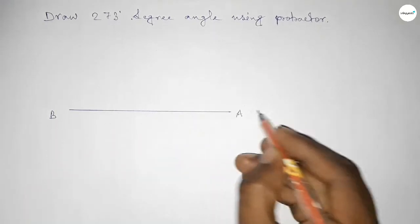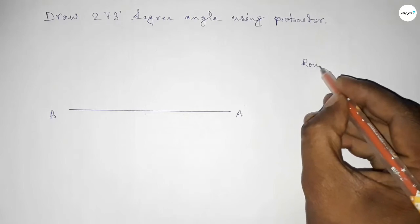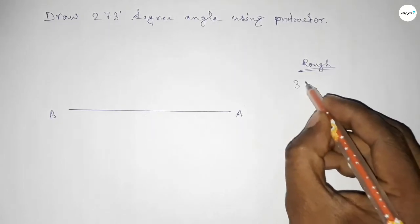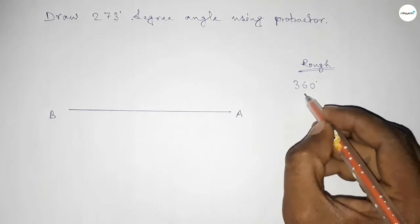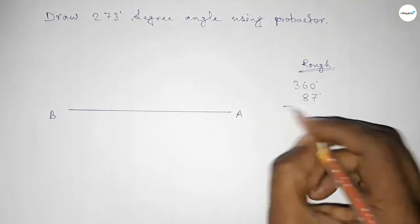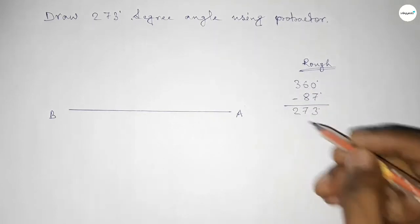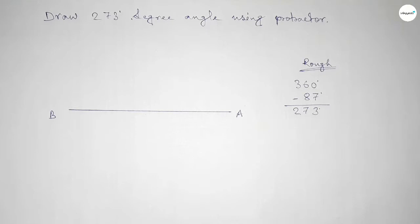Taking here point B and here point A. Now roughly discussing some calculation here. So if we subtract 87 degrees from 360 degrees, then we can get 273 degree angle. So first counting 360 degree angle on the point B.